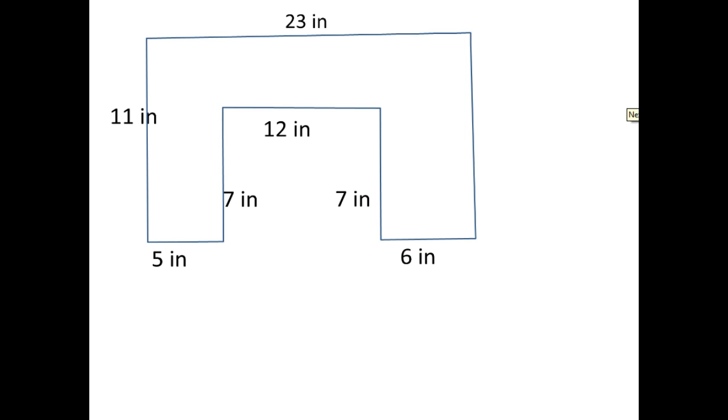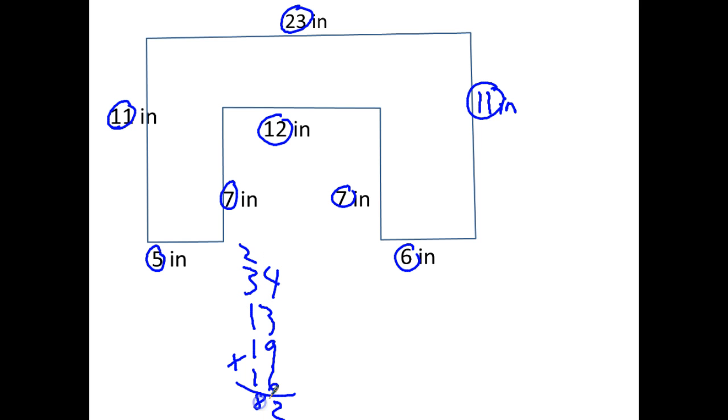All right. This problem got to be slightly different. Let's start with perimeter first. One thing I notice is this side over here does not even have a number. But since the whole outside is basically a rectangle, that 11 must also be going over here. So now what I'm going to do is do my perimeter first. So I got 23 plus 11. That's 34. 6 plus 7, 13. 12 plus 7, 19. 5 plus 11, 16. Add them all together for my perimeter. 7, 16, 22. 5, 6, 7, 8, 82 inches.